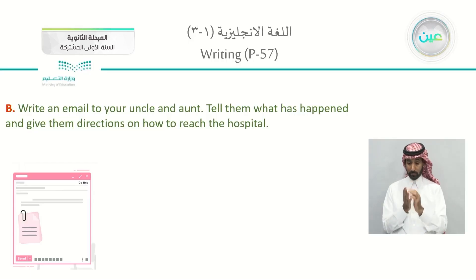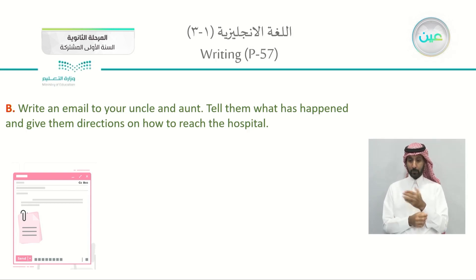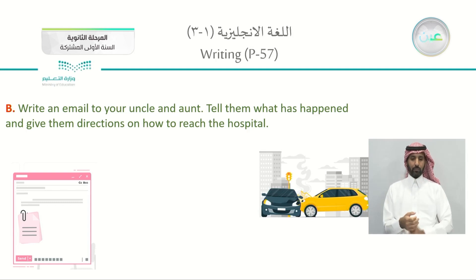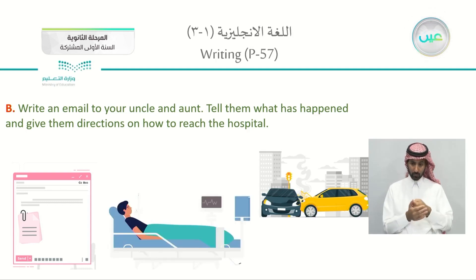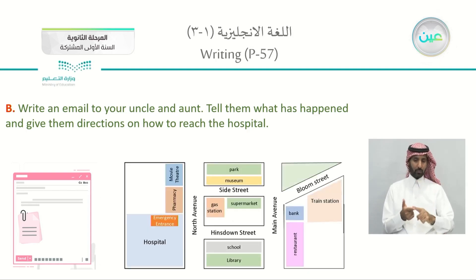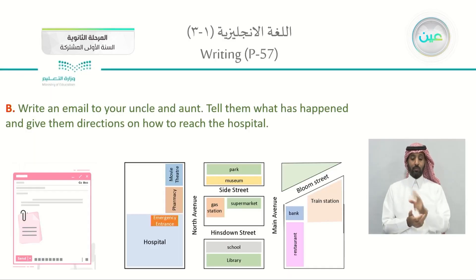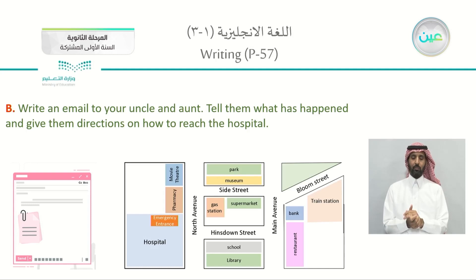On your books, page 57, exercise B: write an email to your uncle and aunt. Tell them what has happened and give them directions on how to reach the hospital. Someone is not feeling very well and you want your uncle and aunt to come to the hospital. Imagine the event — is it a car accident, or someone is hospitalized? We will choose one of these and give them directions using the same map from the previous exercise.